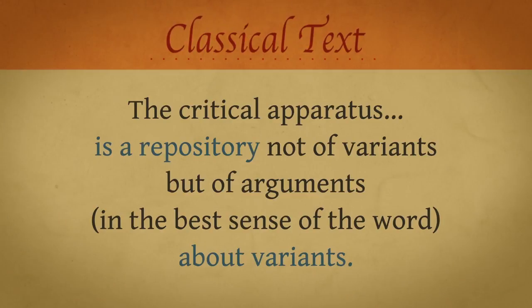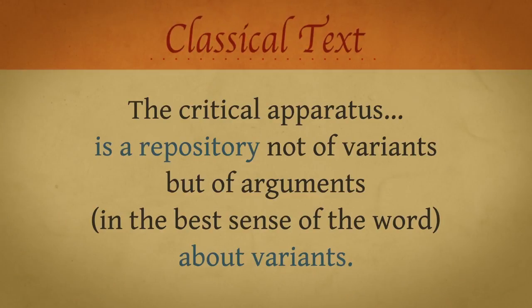As I said before, the critical apparatus is a repository not of variants but of arguments — in the best sense of the word — about variants. This form of philological argumentation may in fact be too highly evolved to move easily into the digital medium.